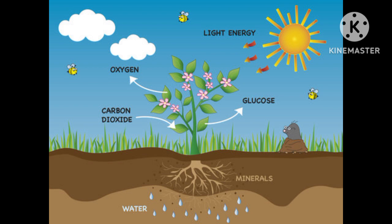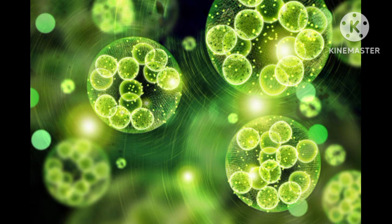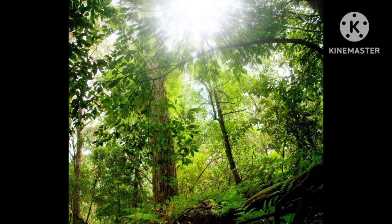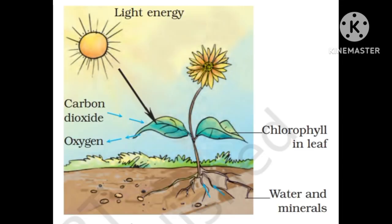The leaves have a green pigment called chlorophyll. Chlorophyll helps to capture the energy of sunlight. It captures the energy of sunlight and uses it to synthesize food from carbon dioxide and water. This process is called photosynthesis.